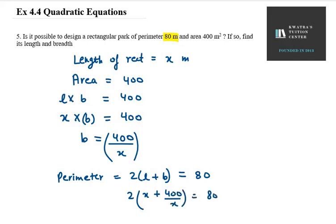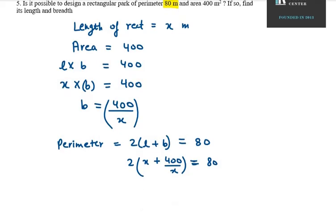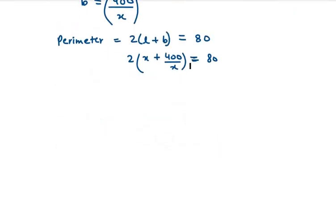Equal to 80. Now you have to simplify the bracket part. So how do we simplify it? 2, LCM will take x. First term is x. It will be x square plus 400.